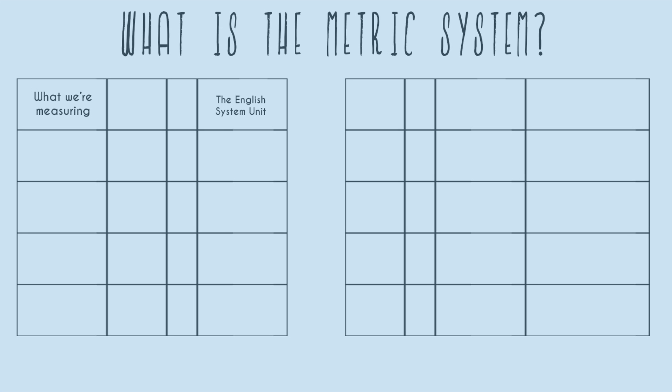The first thing we're going to do is compare the English system — which is a system you're probably used to — with the metric system. We're going to start with length. In the English system, if we're measuring length, most likely we're going to measure it in feet. The metric system is the exact same concept; it's just that in metric, we would answer how long something is in meters.